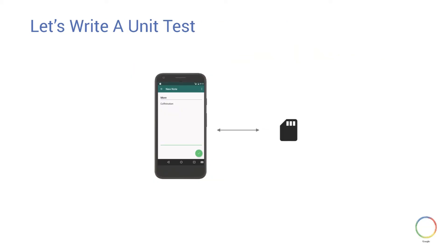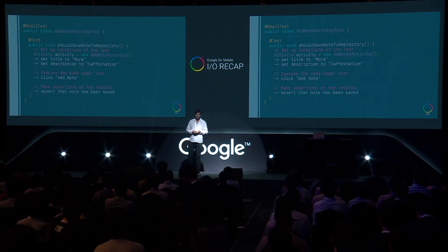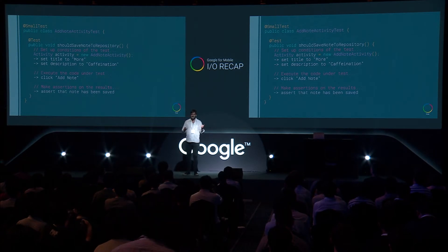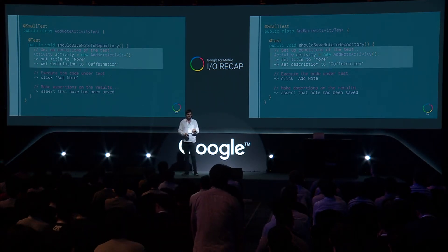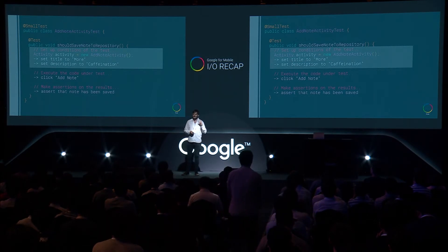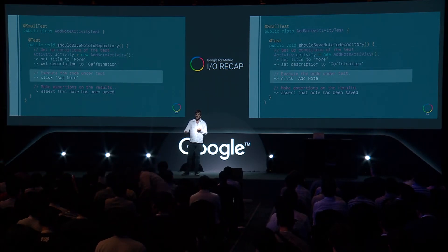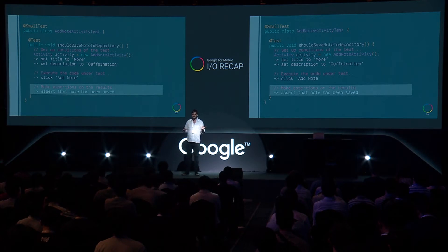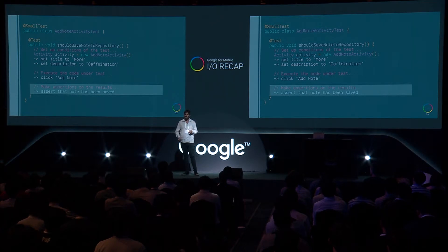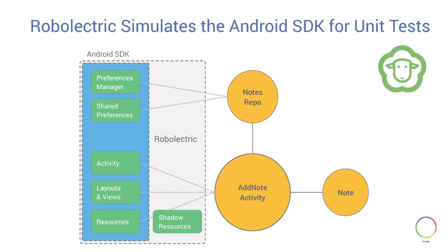Let's write a test for the add note activity. Its job is receiving user input, persisting it to local storage, implemented using an activity saving data to Android shared preferences. An idealized unit test has three key parts: first, setting up the conditions for the test — creating the object under test, the dependencies, setting them up in the right state. Then we exercise the code under test, and then we make assertions on the results. Clearly separating these three sections brings the pertinent items front and center for a really readable test.